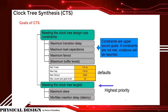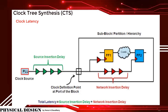Goals of CTS: meeting the clock tree design rule constraints and meeting the clock tree targets. Clock tree design rule constraints are max transition delay, max load capacitance, max fanout, and max buffer level. The targets are maximum skew and min/max insertion delay, i.e., latency. Meeting the clock tree targets is given the highest priority. Clock latency is the total time taken by the clock signal to reach the input of a register. Source latency is the time between the clock source to clock definition ports, and network latency is the time between the clock definition port to the clock leaf cell in the design.